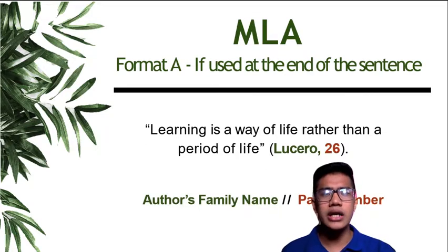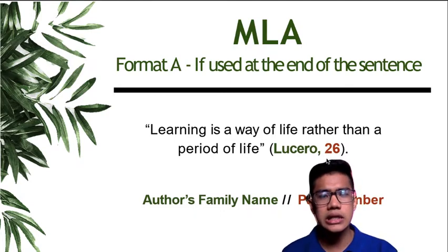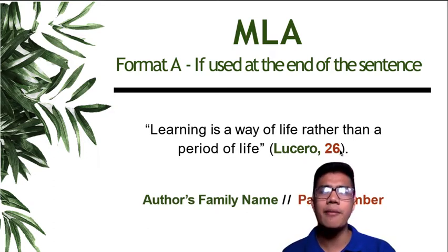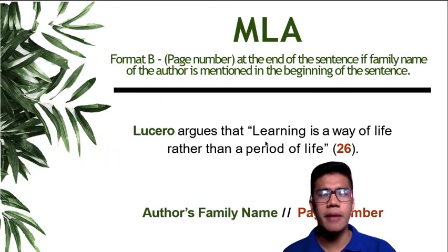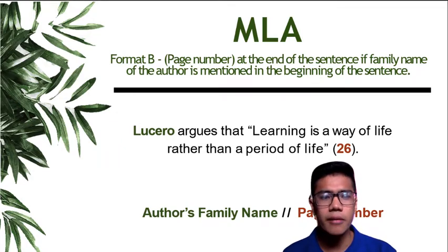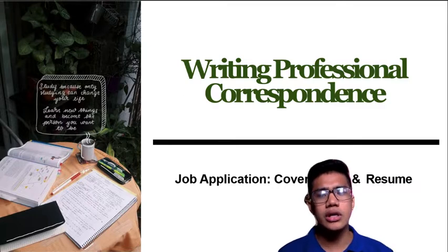For MLA or Modern Language Association style, we use the author's family name followed by the page number — for example, 'Lucero 26' — replacing the year with the page number. This is quite different from APA style. In our schools, we prefer APA style for social sciences, so use the year published rather than the page number. Use APA most especially in your research.